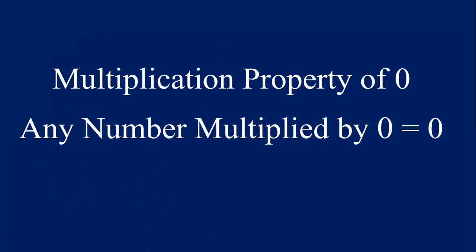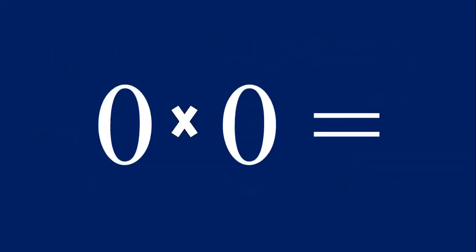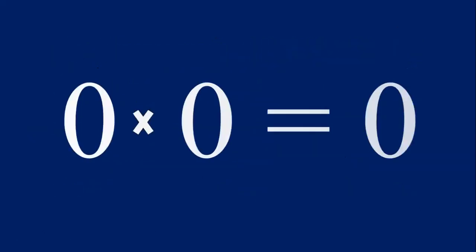The multiplication property of 0 says that any number multiplied by 0 equals 0. So let's practice multiplying the numbers 1 through 12 by 0. And remember, our answer for each of these equations will be 0. That's right — 0 x 0 equals 0.